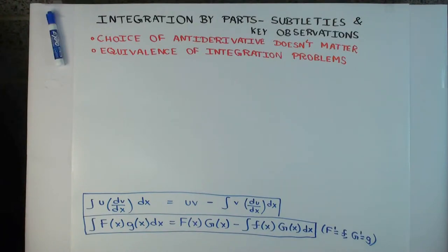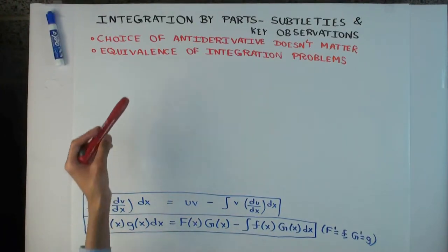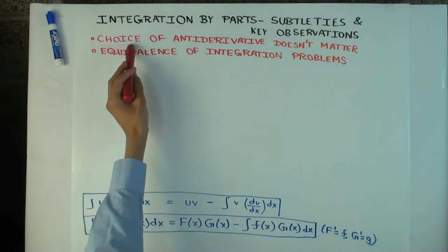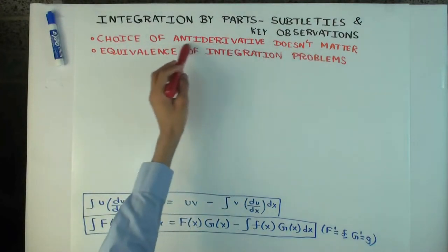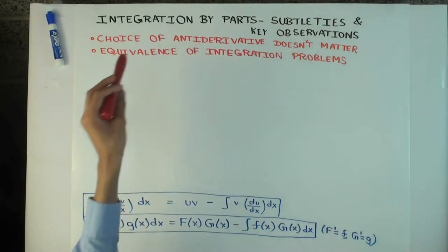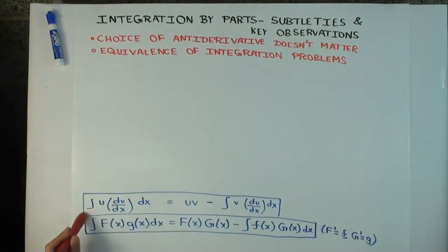Okay, so in this talk, I'm going to consider some of the subtleties and some key observations associated with integration by parts. So let's do the first one, which is fairly easy, and I just want to dispose of that quickly, which is that the choice of antiderivative doesn't matter. So what do I mean by that? Well, let's go down here to these formulas.